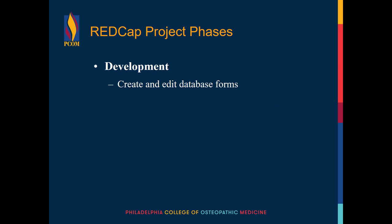A REDCap project database has multiple stages. The first stage is development. At this stage, you create your project and design your database or survey forms. You'll want to test these as much as you can to ensure that you're collecting all necessary information and that the flow of information works well for your project. You're also going to want to make sure that any special features you use, like branching logic or calculated fields, are working correctly.